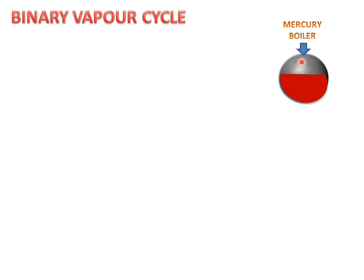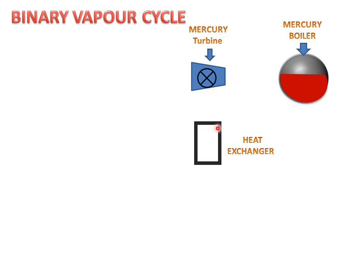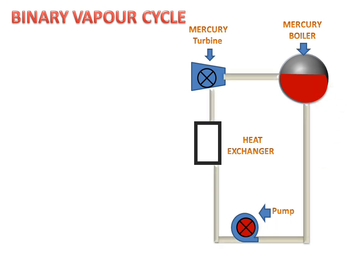In the mercury boiler we have mercury. There is a mercury turbine which will rotate by the mercury vapors. There is a heat exchanger from which heat will be exchanged by the vapors. There is a mercury pump which will pump the mercury vapor back to the mercury boiler. These are the connecting pipes, and this complete cycle is called one cycle.